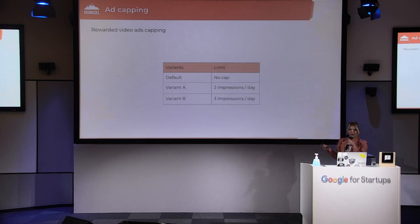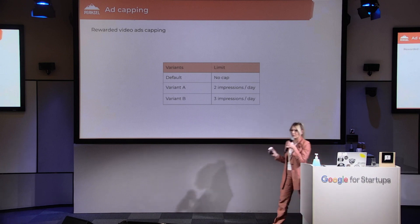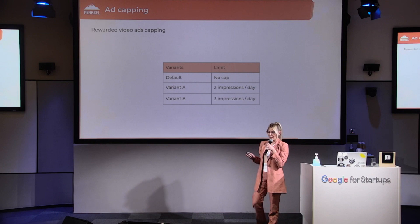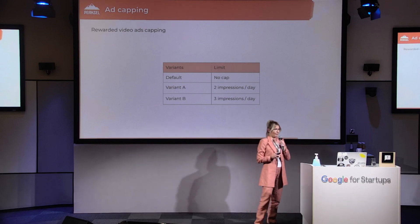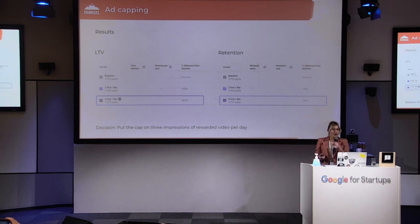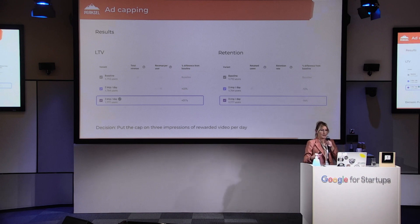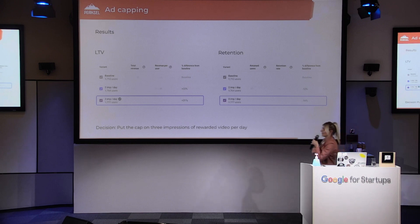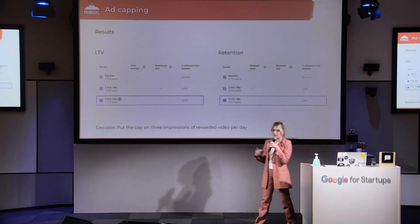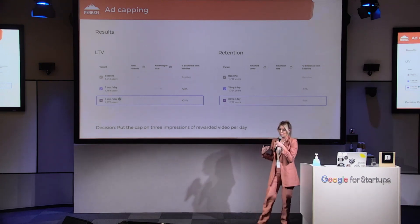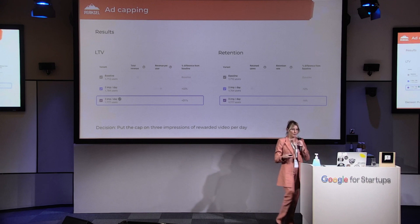When it comes to rewarded video, we tested ad capping. The default version has no limit — no cap at all — and we tested it against two and three impressions per day. When we show users three impressions per day of rewarded video, the LTV is better by 31%, although retention dropped a little bit. Given that our goal here was to increase revenue, we made the decision to set the cap at three impressions of rewarded video per day.